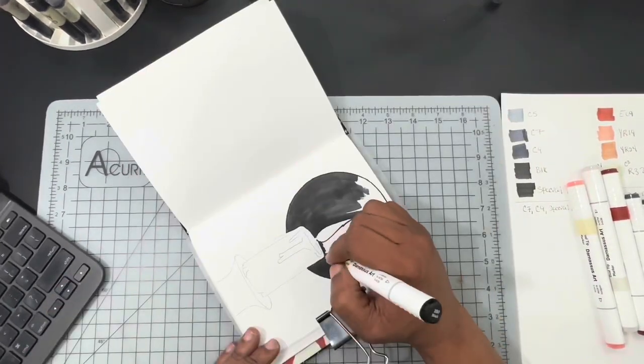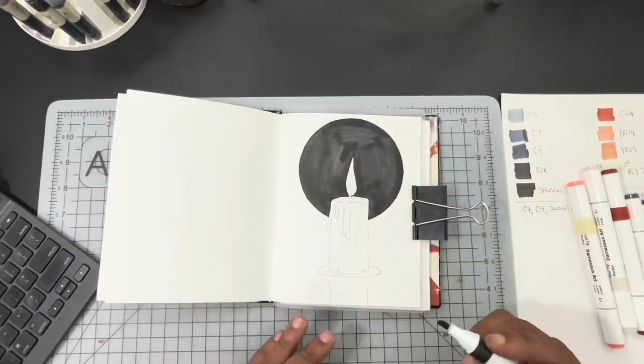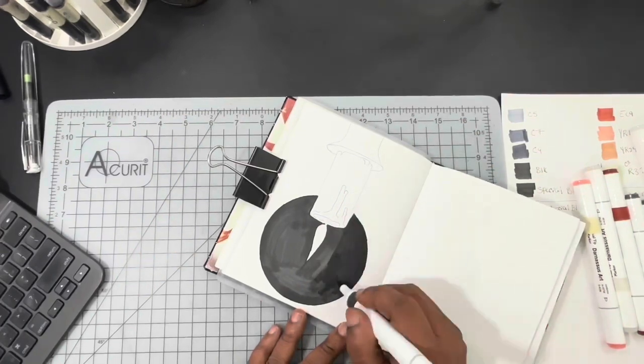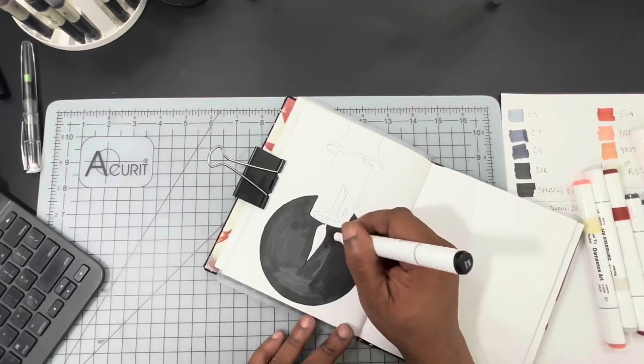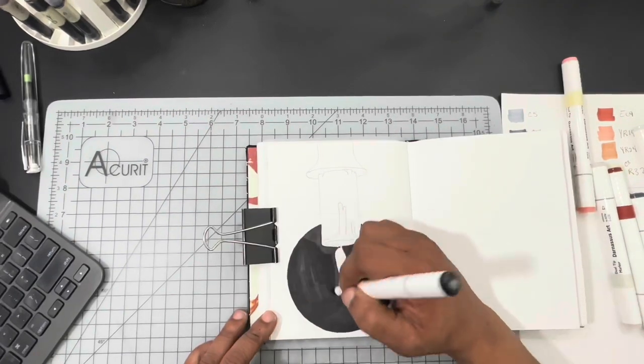After I got the candle sketched in, I went in and started to work with my Darnassus 88-piece alcohol marker set. But now, let me stop right there and say that was a struggle in itself.